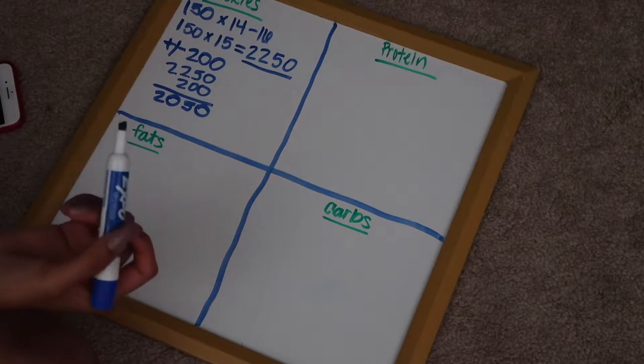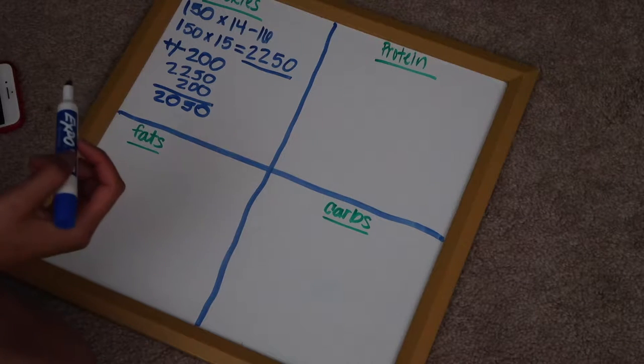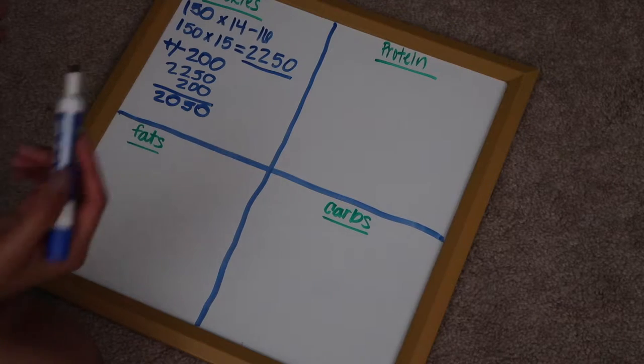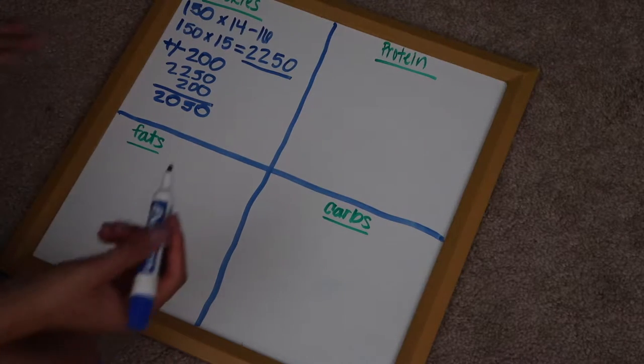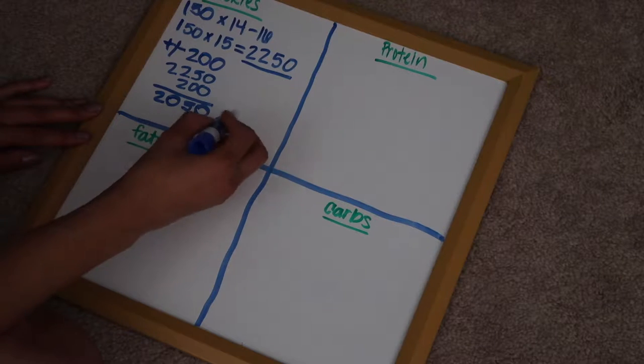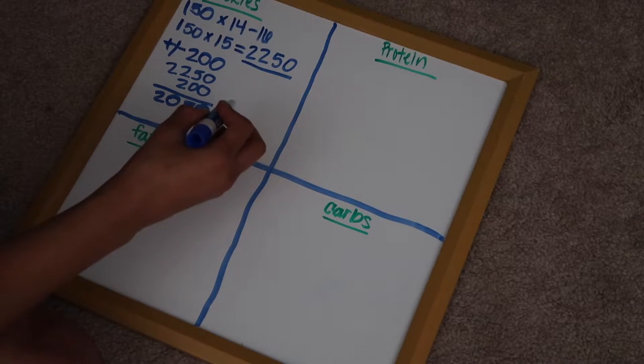Since I'm currently cutting, I'm going to subtract 200 and I'm going to get 2050. When you cut, you are cutting because you want to lose weight, you want to get smaller. Everyone has their own reasons for cutting. I'm cutting because I'm trying to lose a little bit of fat. So this is my calorie, this is my daily maintenance calorie.